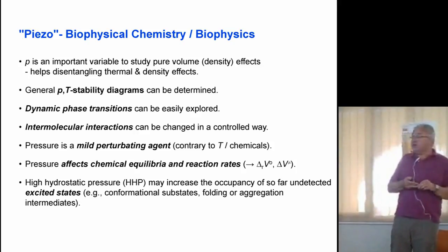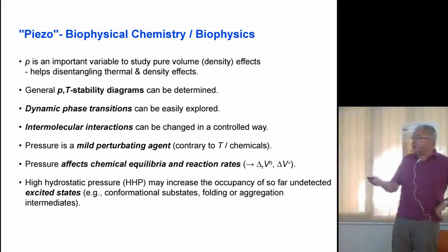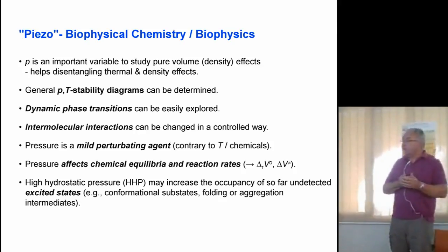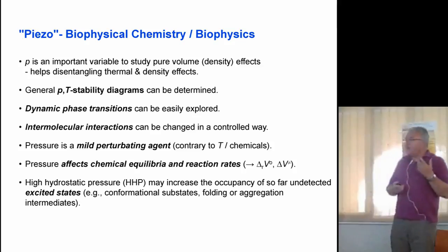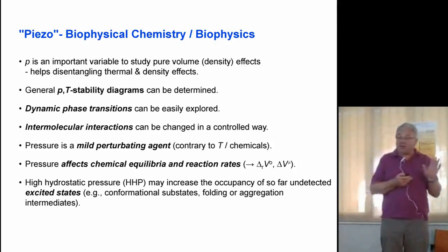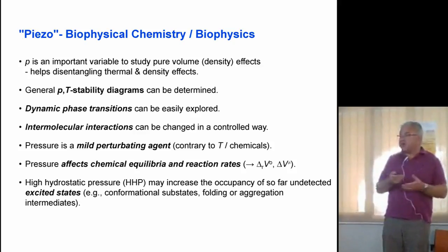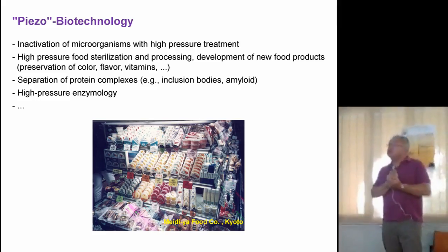As a mild perturbating agent, pressure affects chemical equilibria and reaction rates. You can determine the activation volume and the reaction volume, which gives additional information. By pressure, you can increase the occupancy of excited states and then study them thoroughly — whether these are conformational substates of a protein, folding intermediates, or aggregation pathways.